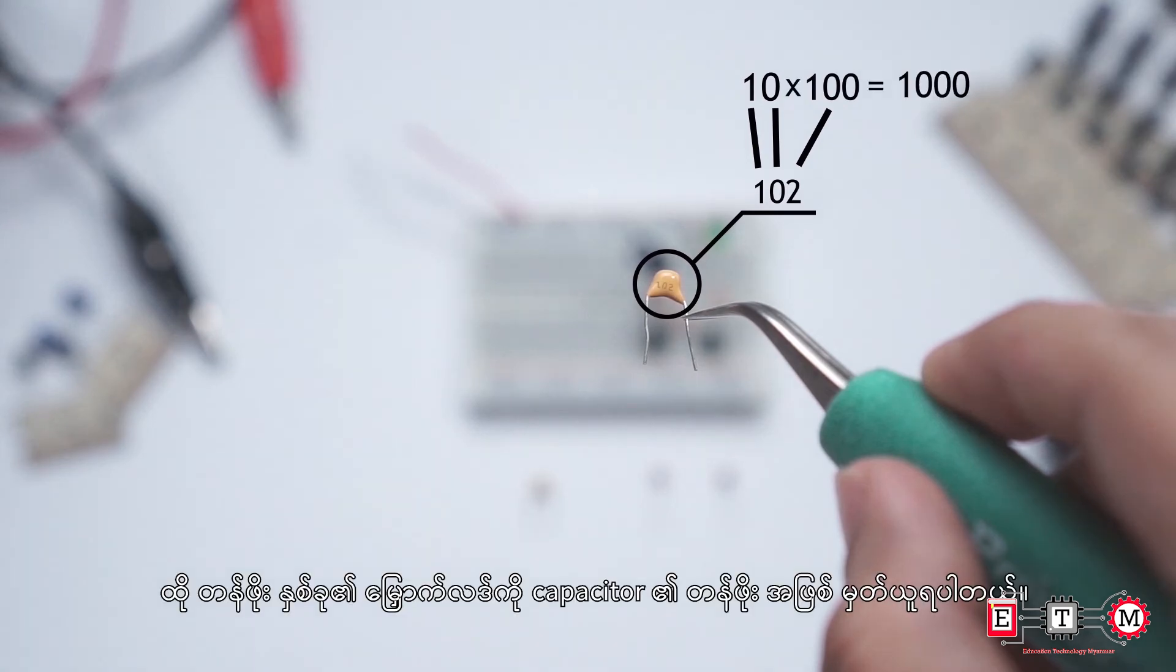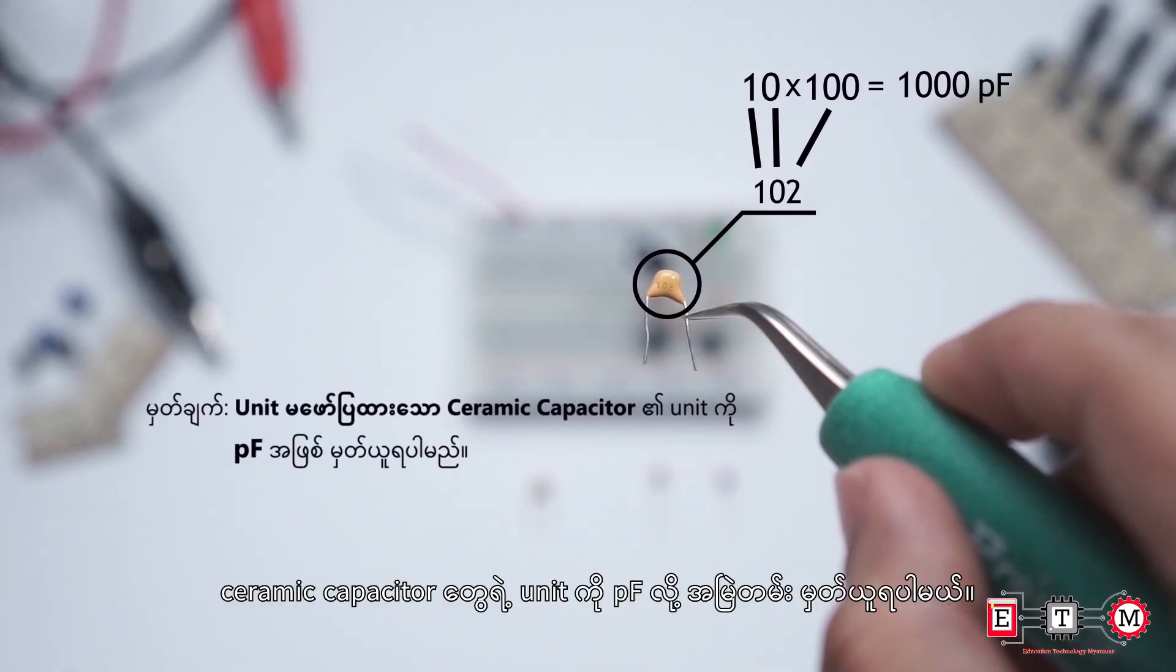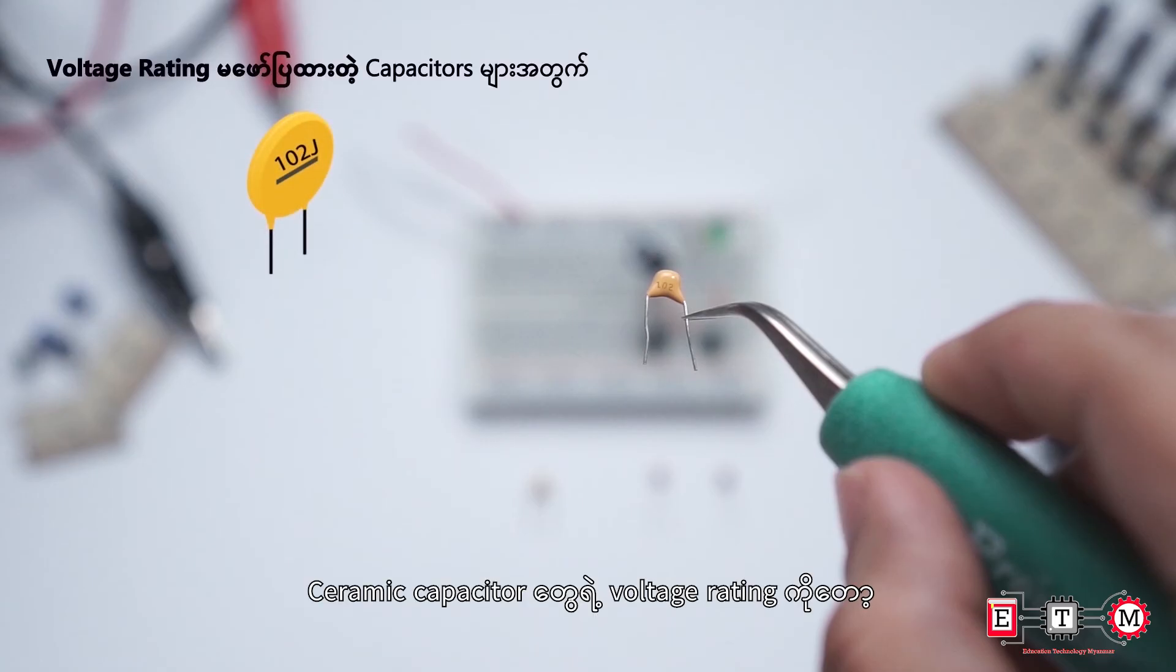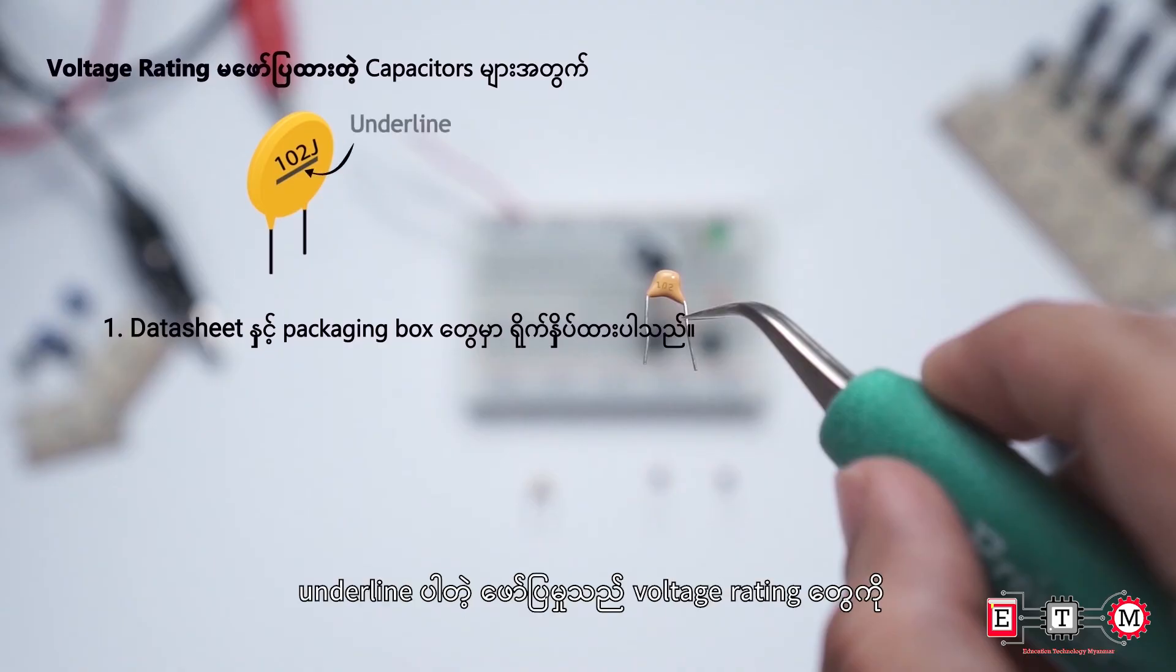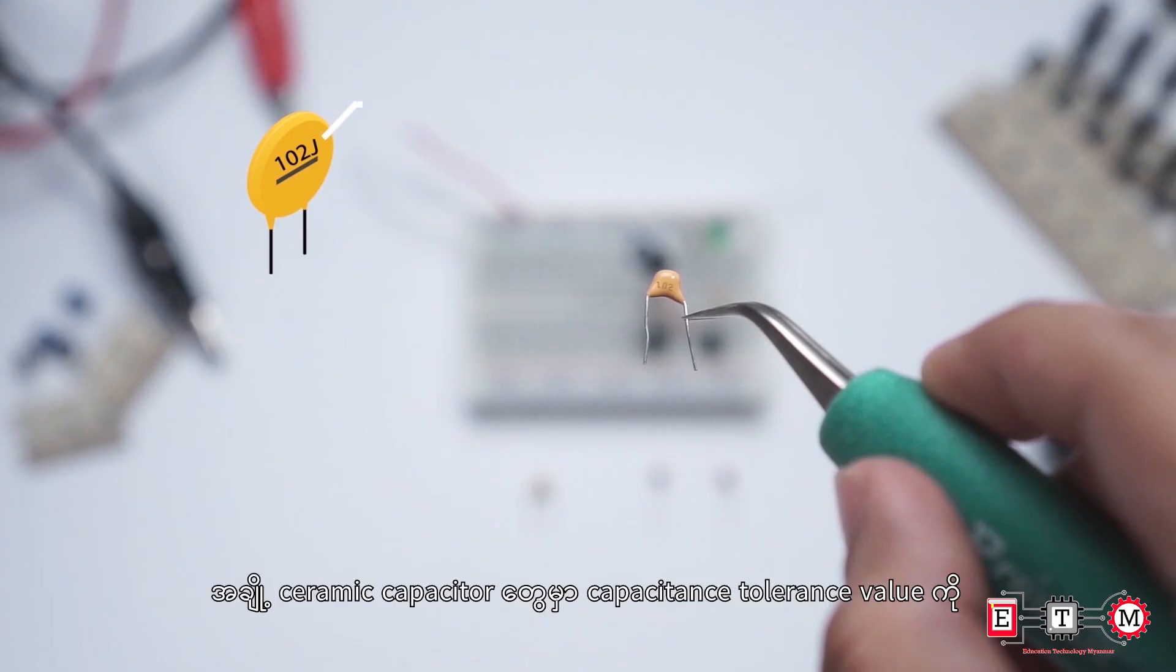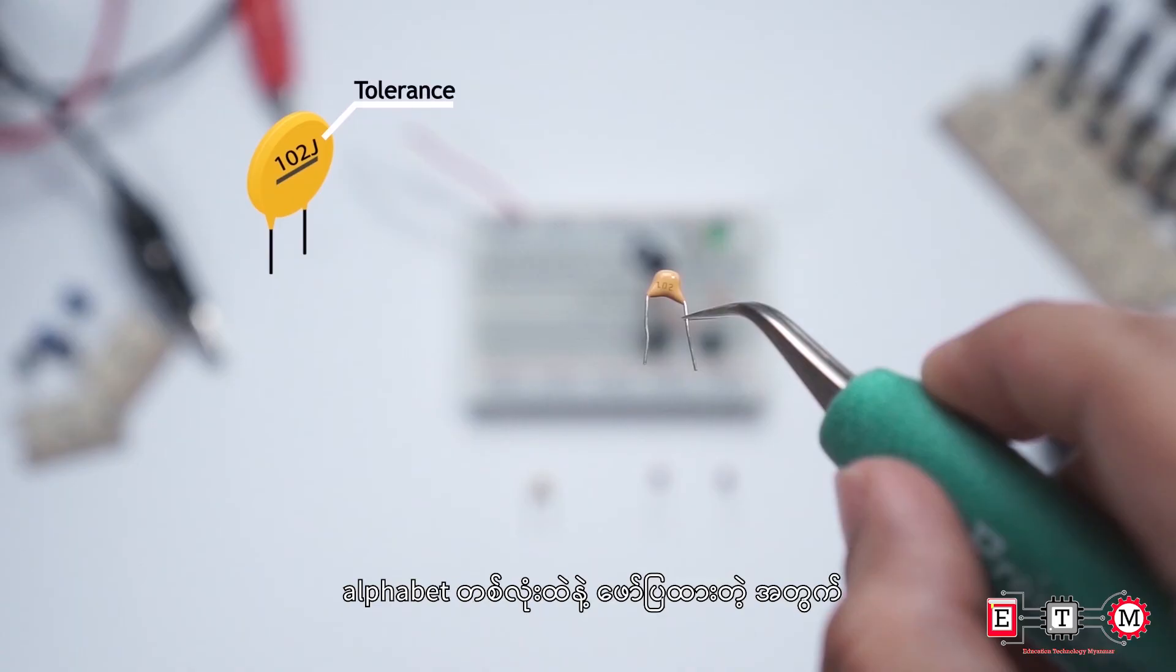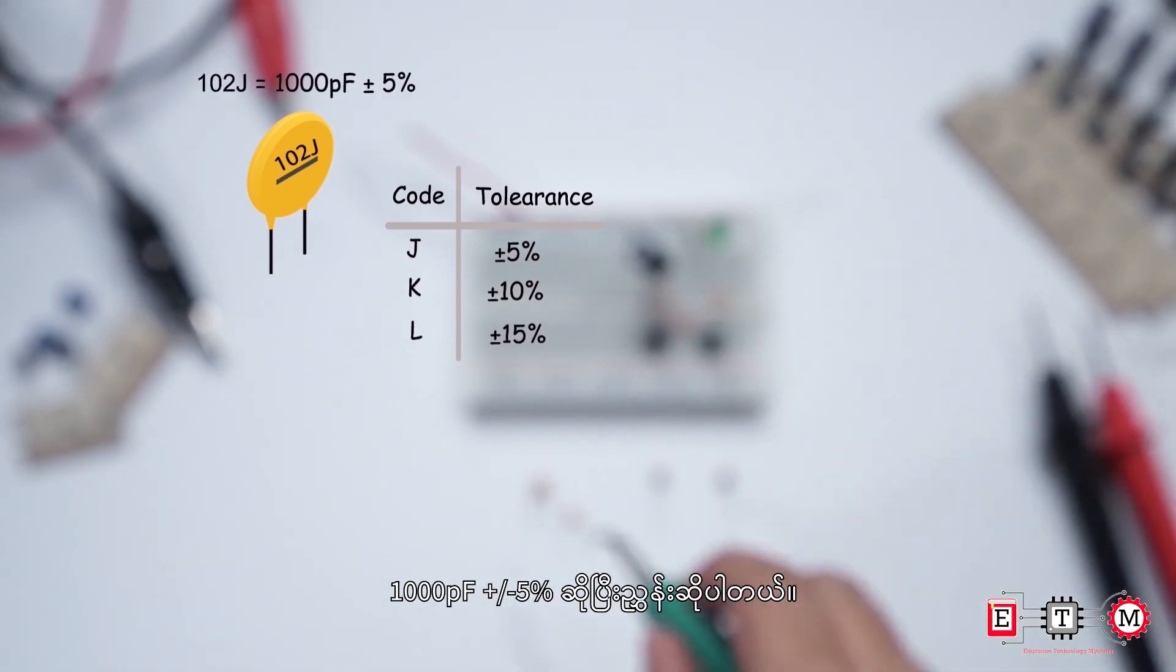Ceramic capacitors have markings showing their value. For example, 102 means the capacitor value is 1000 picofarad. The marking includes the capacitor value and tolerance value, with the tolerance percentage indicated. So 102 represents 1000 picofarad plus or minus 5%.